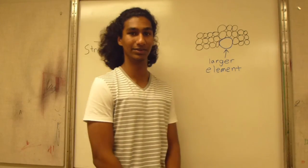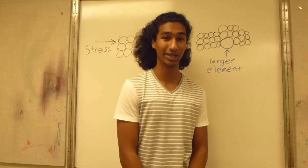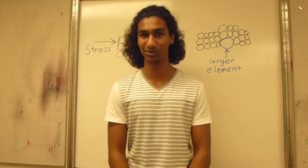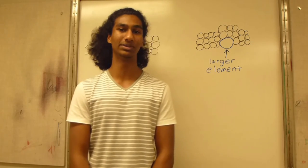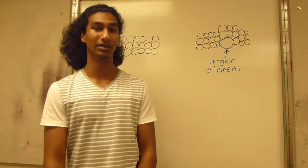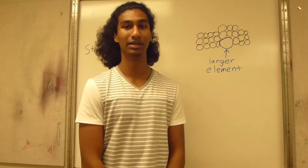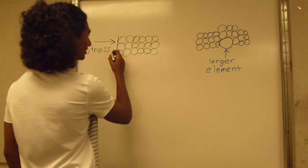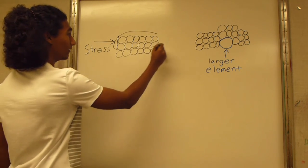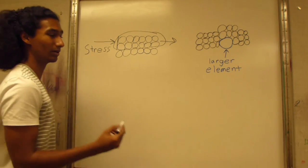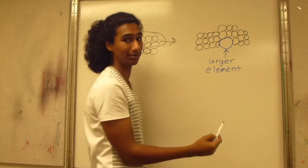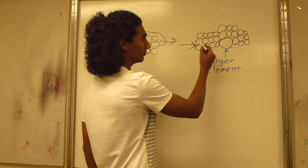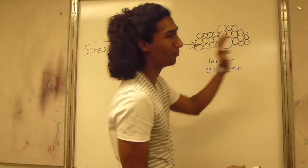Metals contain a lattice of cations and a sea of electrons with an orderly arrangement of atoms. As a result, metal layers are able to slide over each other when stress is applied. The presence of carbon, whose atoms are much smaller than the metal cations, modifies the microstructure of the base metal by disrupting the regular repeating lattice. Carbon does this by fitting into the holes of the metal lattice, making it difficult for one layer to slide over another. When stress is applied, a larger element with a smaller carbon atom fitting in between will help stop the stress from rolling everything over.